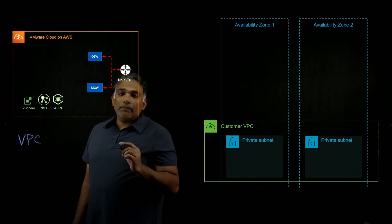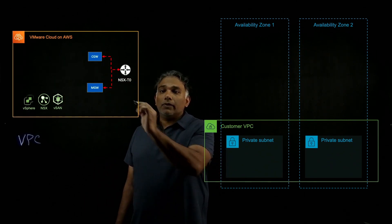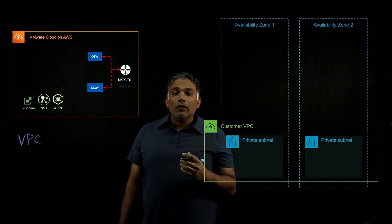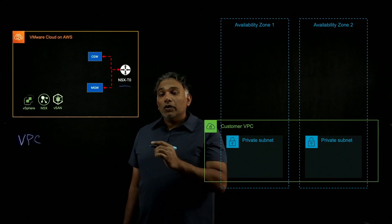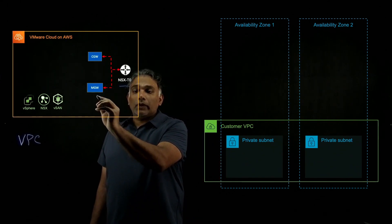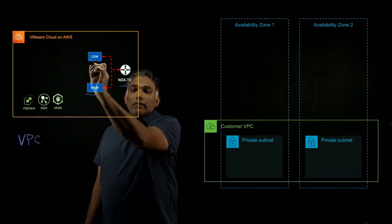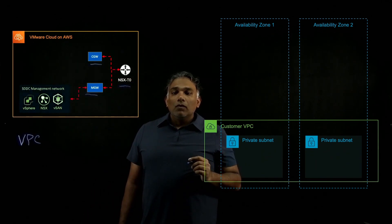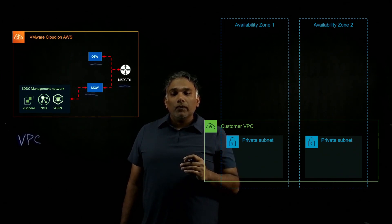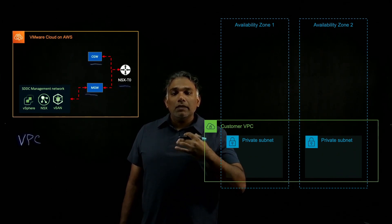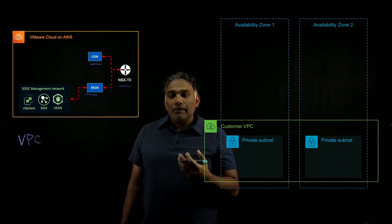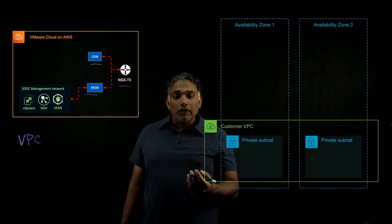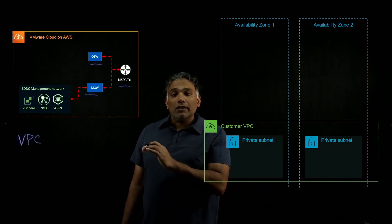When this gets deployed, NSX deploys an NSX-T0 as you can see. NSX-T0 is your main router into your SDDC. From there you have two main gateways that get deployed. One is your management gateway and the other one is your compute gateway. Your management gateway is where all of your SDDC management VMs get deployed, such as vCenter, NSX Manager, and any other add-on services such as Site Recovery or HCX that get deployed within this subnet.